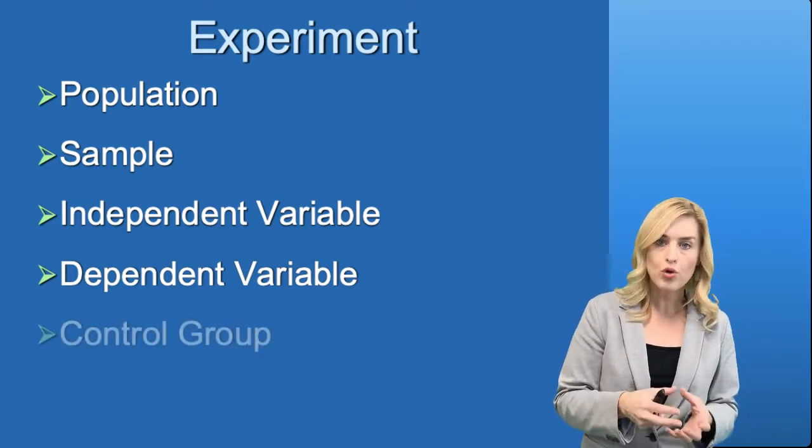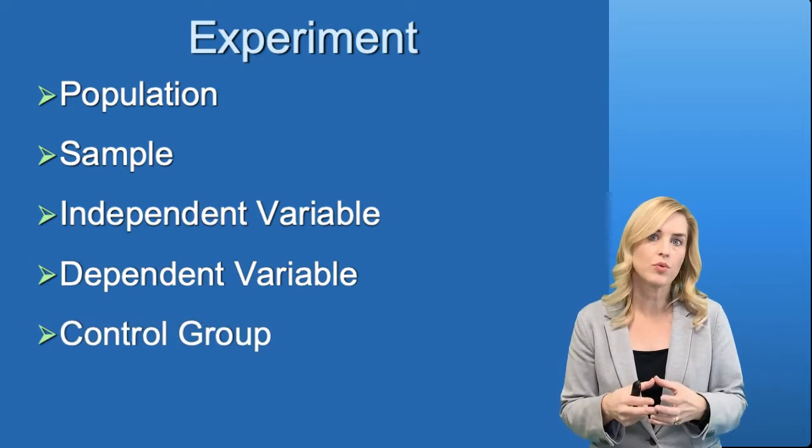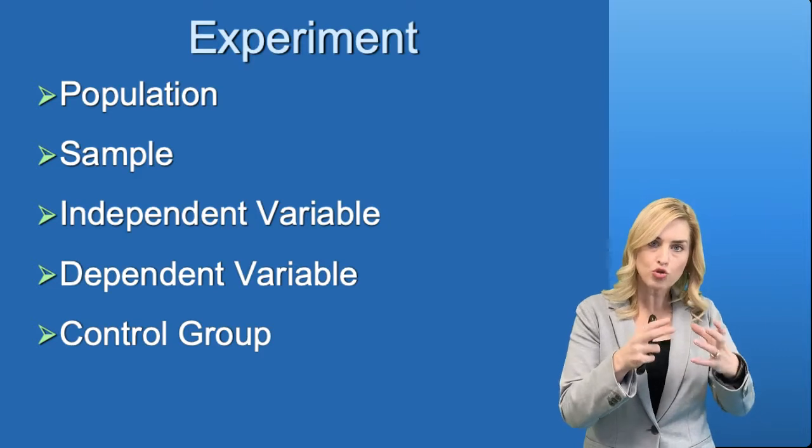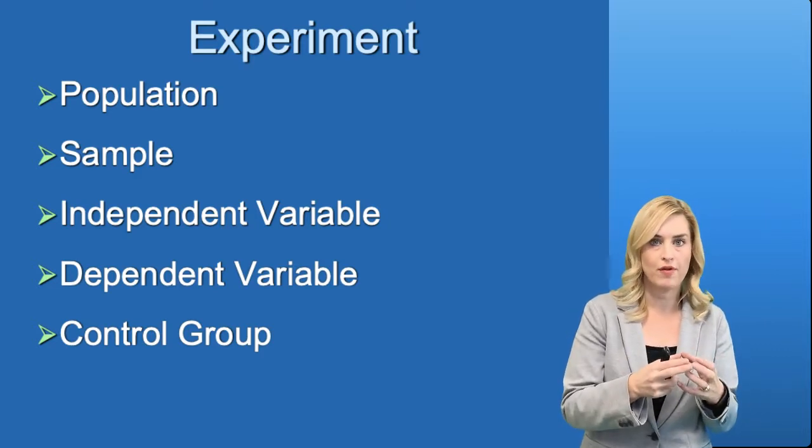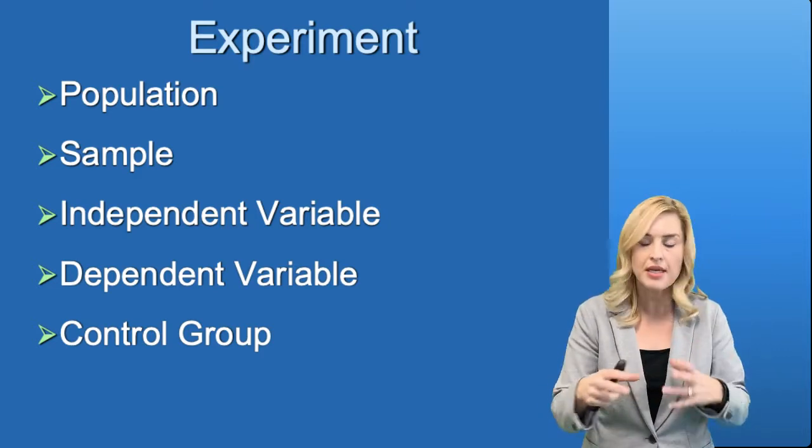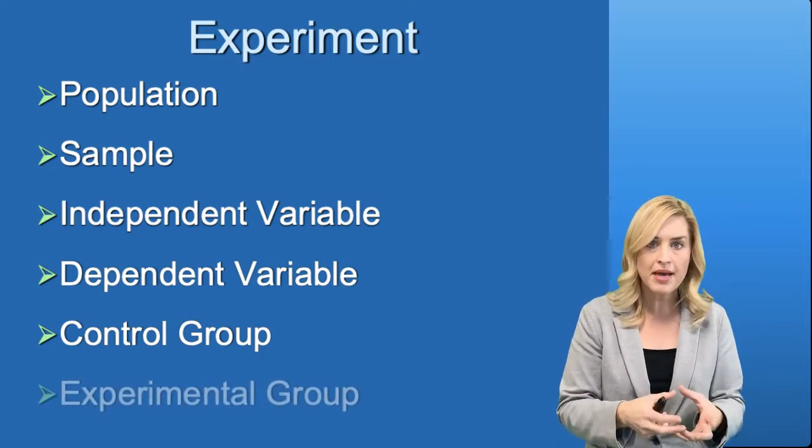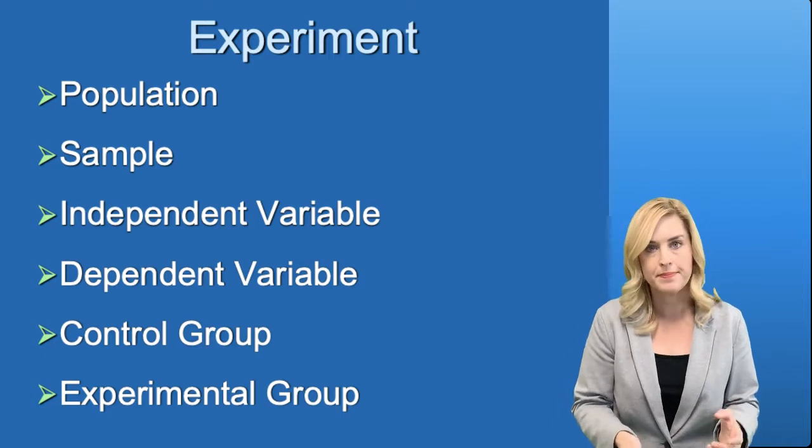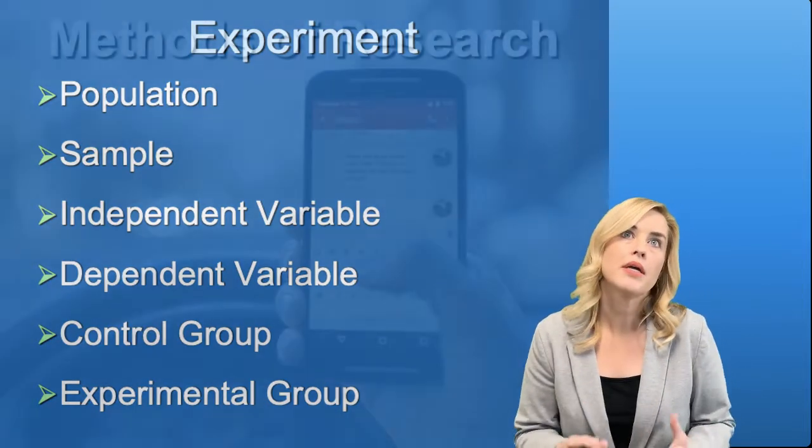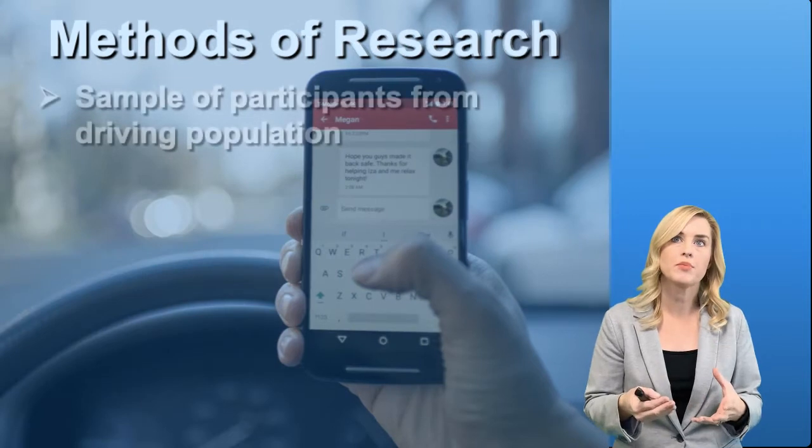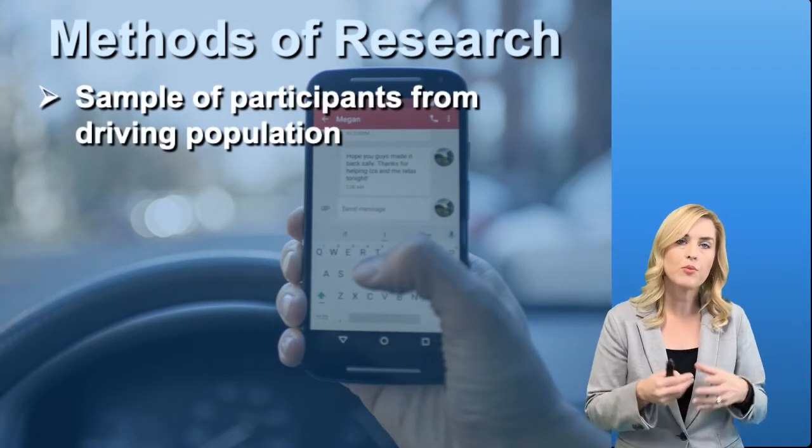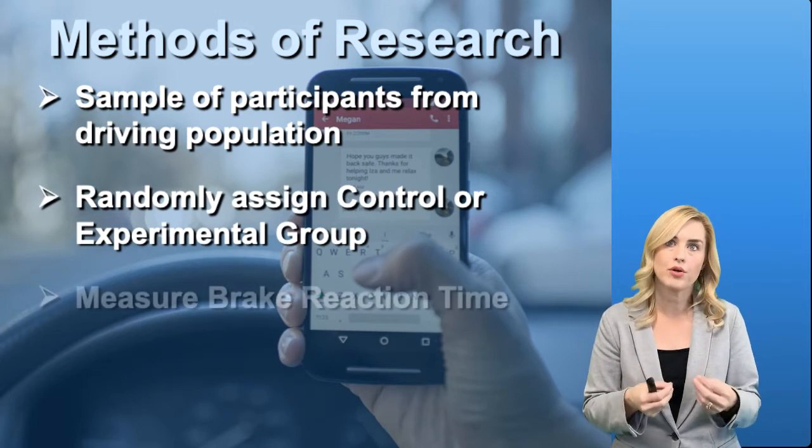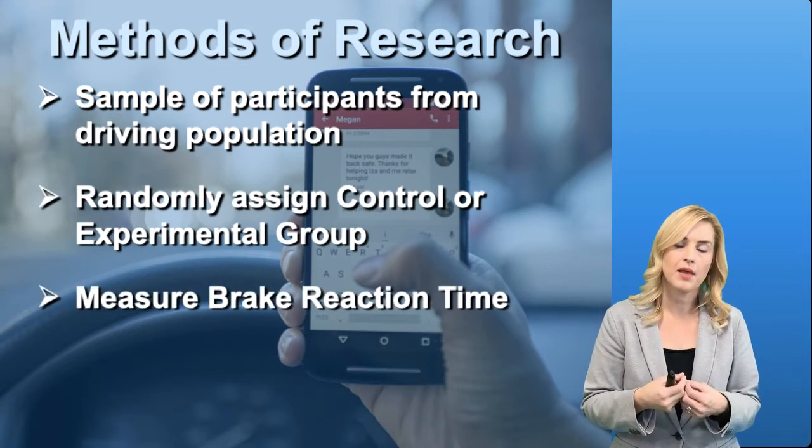We can also have control groups, and we often see this when we are trying to do some type of therapeutic intervention, or where we control for some variable that is going to impact the study in some way. The experimental group is the group that actually receives the experiment. In our example here, we have a sample of participants from a driving population, and we randomly assign them to the control or experimental group, and we measure their brake reaction time.